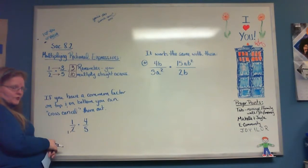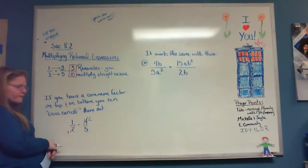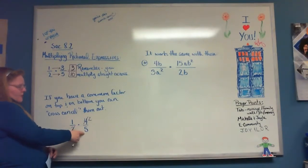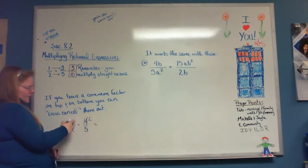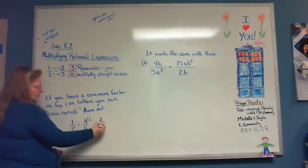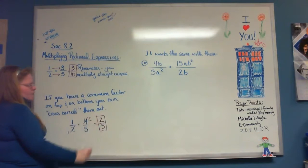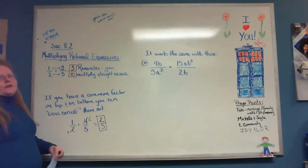Cancel out the 2 - 2 goes into 2 one time, and cancel out the 4 - 2 goes into 4 two times. Cross-canceling means something on top with something on bottom - that's the key. Now multiply straight across: 1 times 2 is 2, and 1 times 5 is 5, giving 2 over 5. They didn't ask about restrictions, so we don't have to worry about that for this section.